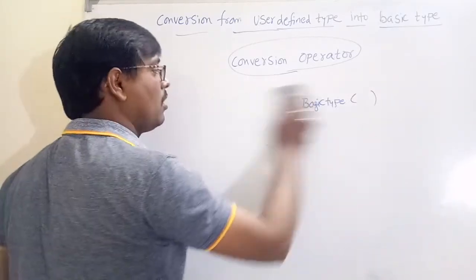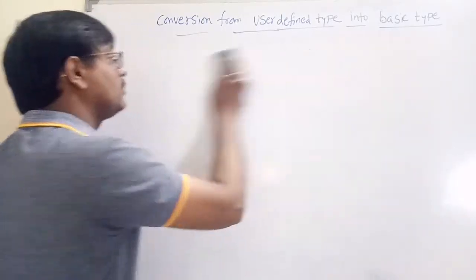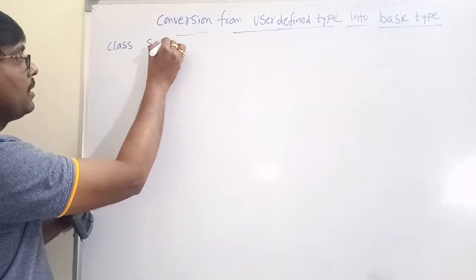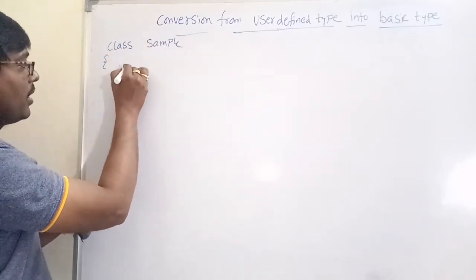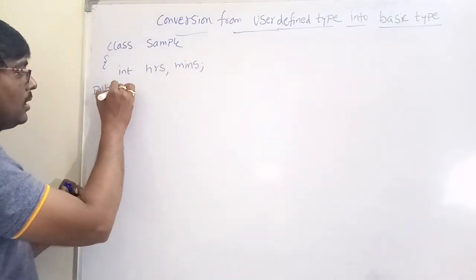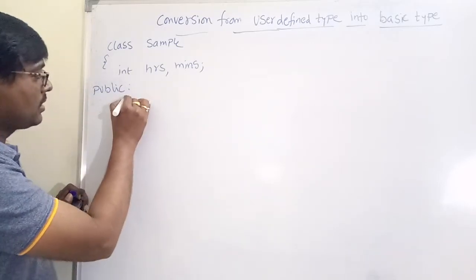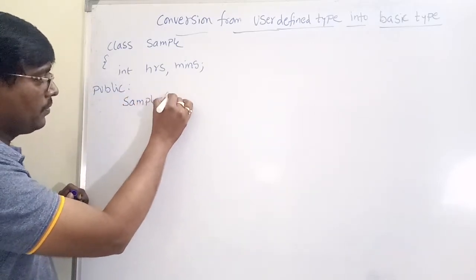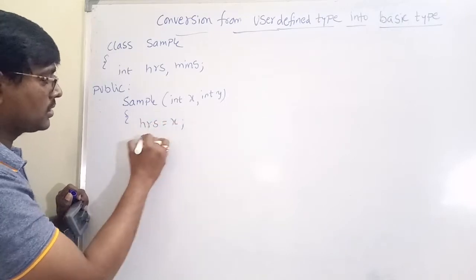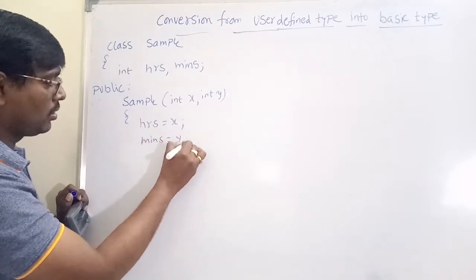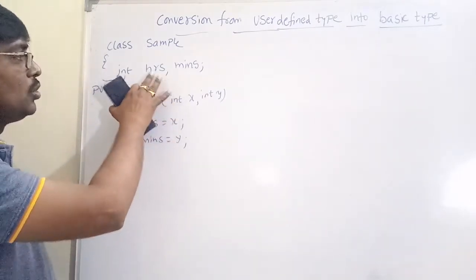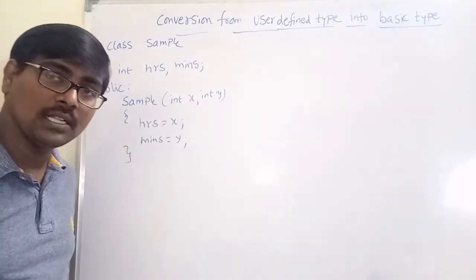Now consider a simple example. Class sample has int hours and minutes as private members. In the public section, we use a constructor: sample(int x, int y), where hours is equal to x and minutes is equal to y. This is a normal constructor which is used to initialize our data members.